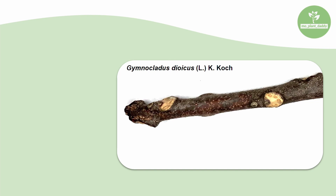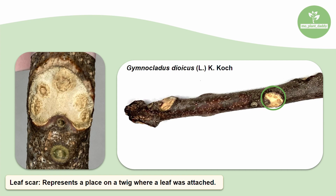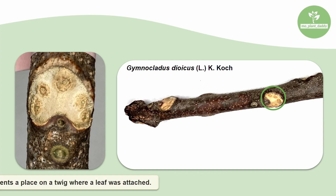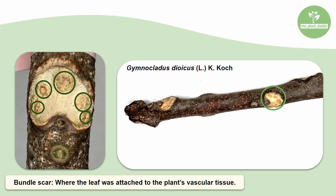Besides types of buds, leaf and bundle scars are important to know. This is the twig of a Kentucky coffee tree that will be used to help us identify leaf and bundle scars. The pale bean-shaped area on this twig is the leaf scar. A leaf scar represents a place on a twig where a leaf was once attached. Leaf scars can be a few different shapes and sizes, but we aren't going to cover that in this video. Inside of the leaf scar is a bundle scar — this is where the leaf was attached to the plant's vascular tissue.